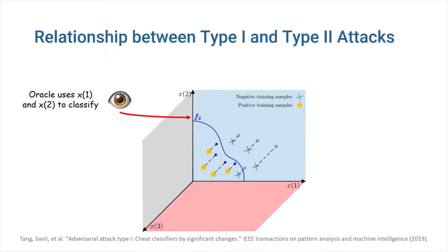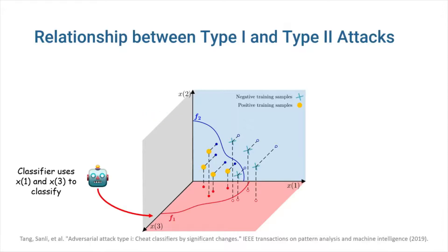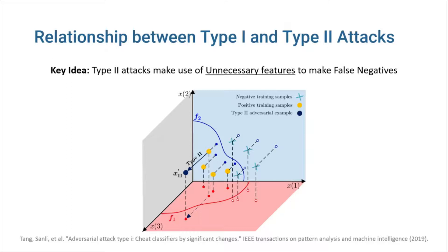Let's take a closer look at these two sorts of attacks and how they differ. We have several points in a three-dimensional space that correspond to two classes of positive and negative training samples. The oracle utilizes features x1 and x2 to categorize these points. Hence, these two features are the best characteristics that any classifier can use to classify these training samples. However, our trained classifier is unaware of the optimal features and classifies the points using x1 and x3. In order to perform a type 2 attack on this classifier, we have to take advantage of the unnecessary feature x3.